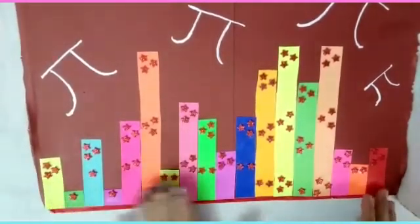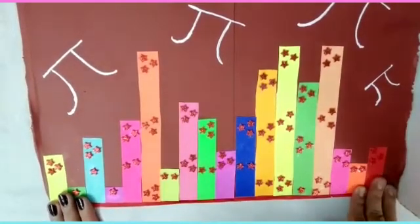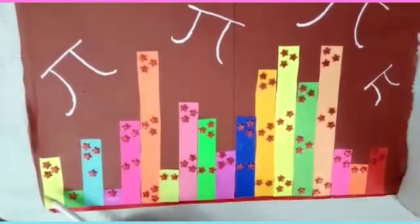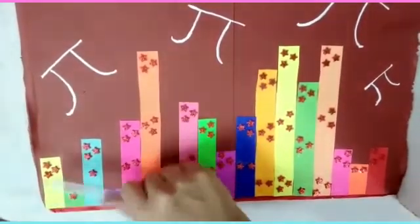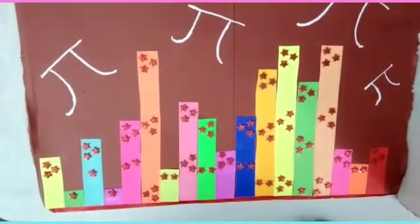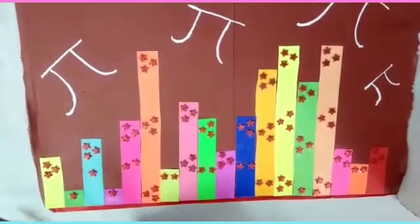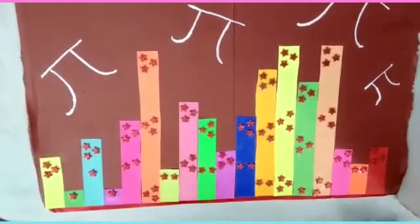So this is a pie city. This has been, the bars have been cut out according to the value of pie. Like this is 3. Now, 3 was very small up to here. So I have doubled it and I have taken up to 6. So I have doubled the value of all the digits.